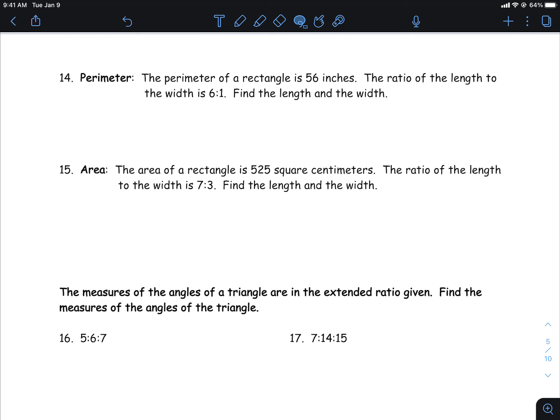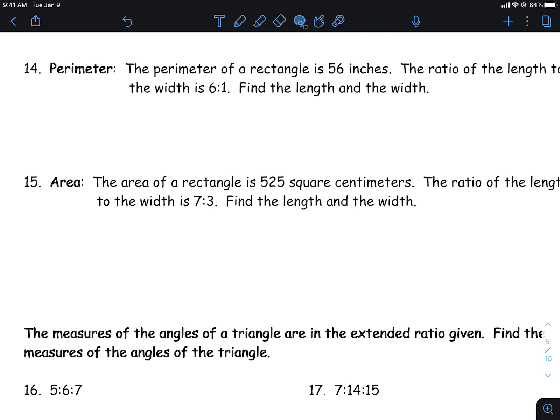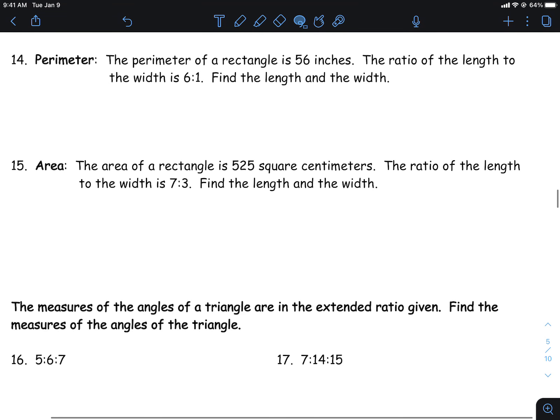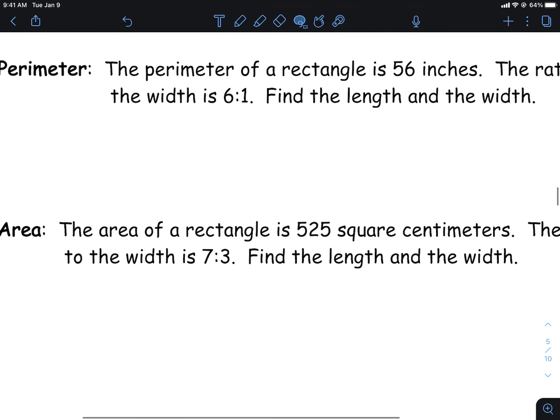All right, number 14. Notice here that I give you a ratio between the width on this one. We've got a rectangle, its perimeter is 56, and you've got a ratio between the length and the width. First of all, let's draw ourselves a rectangular picture.